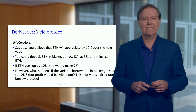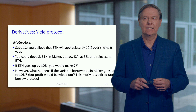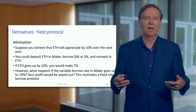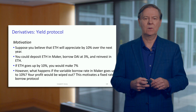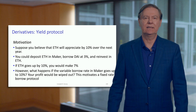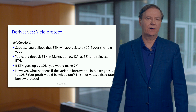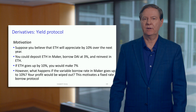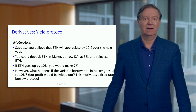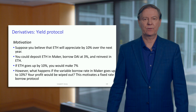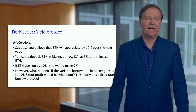One of the things that is missing currently in the DeFi space is the ability to have some sort of stability in a borrow rate. Suppose you think that Ether is going to appreciate by 10% over the next year. What you could do is deposit your ETH into, let's say, Maker and borrow DAI and pay 3% in terms of an interest rate. Maybe you actually reinvest and buy some more Ether.